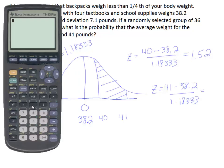Let's do the second one. Let's do this one all at once. So I'm going to put the top in parentheses. So I have 41 minus 38.2, and I'm going to close up that parentheses on top, so the whole numerator is in a parentheses, divided by 1.18333. And I get 2.37.